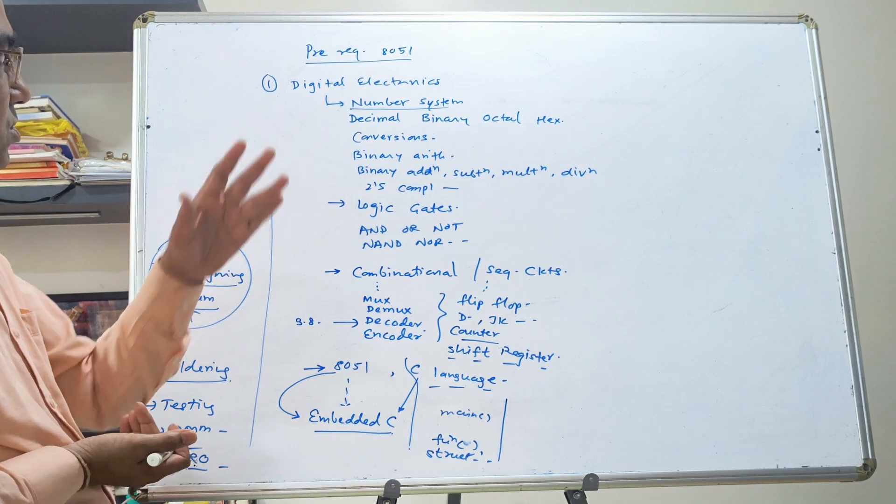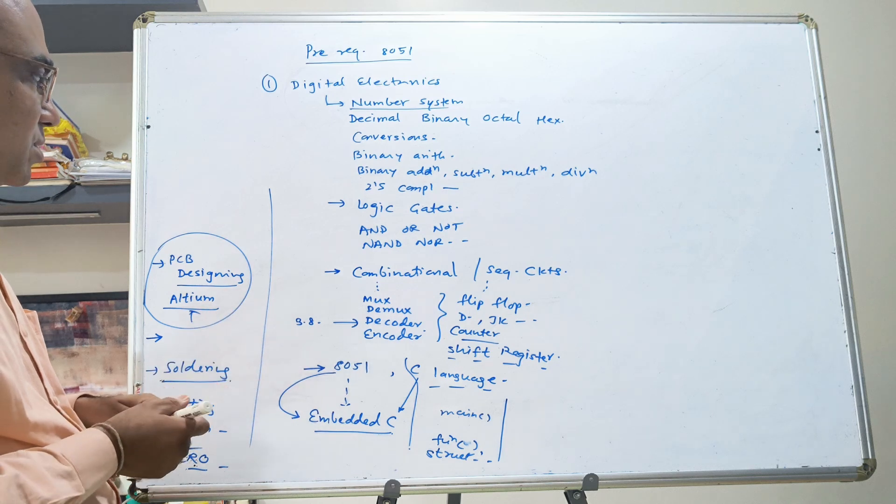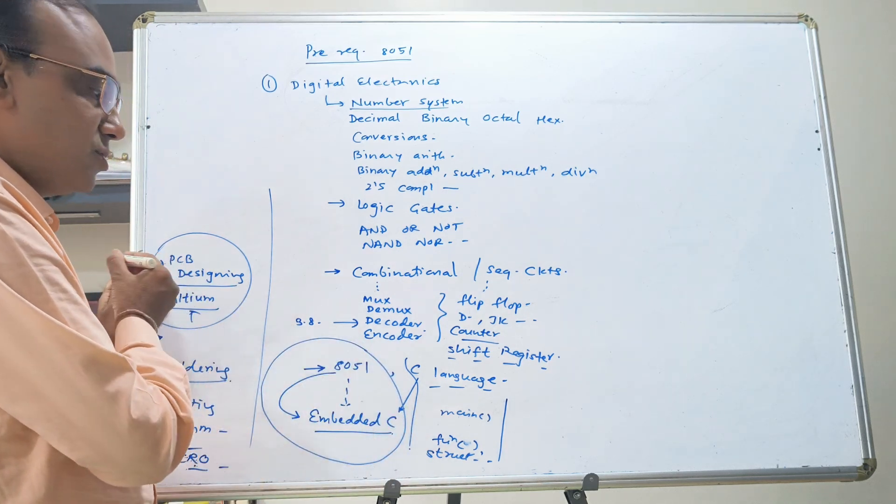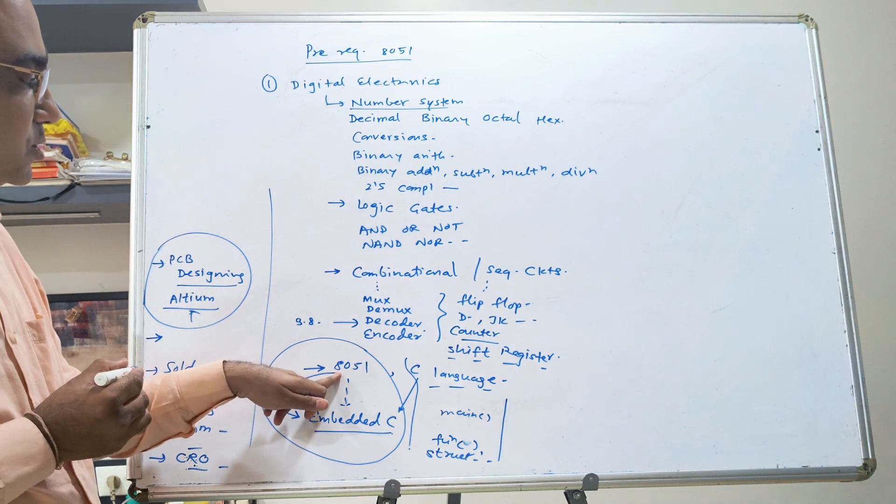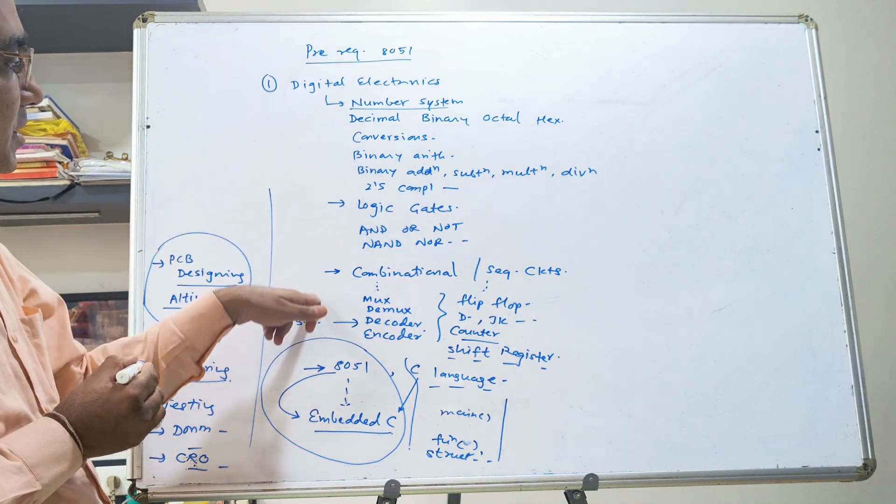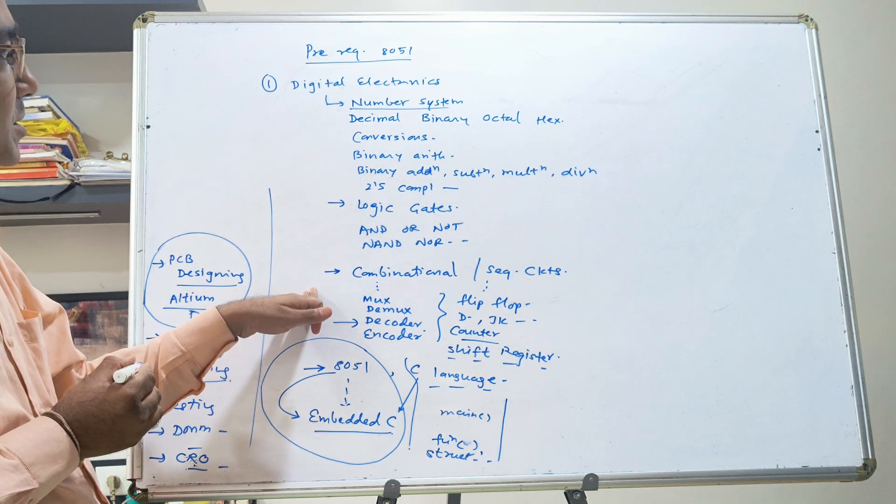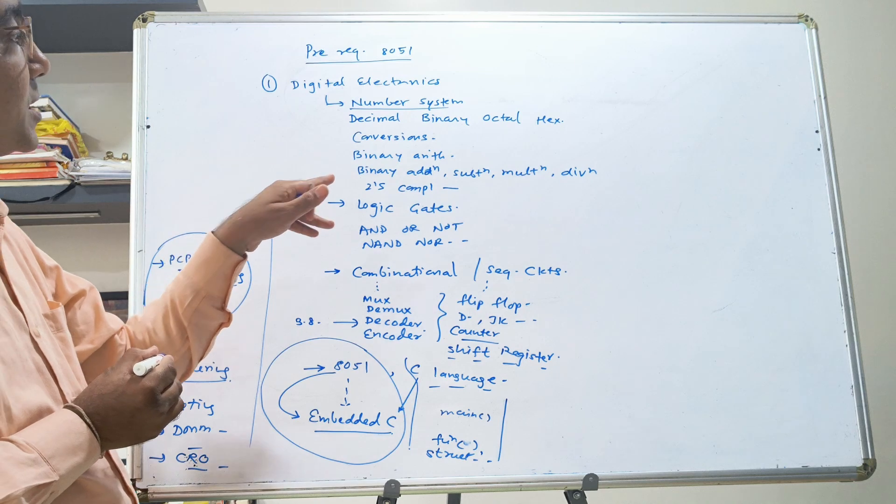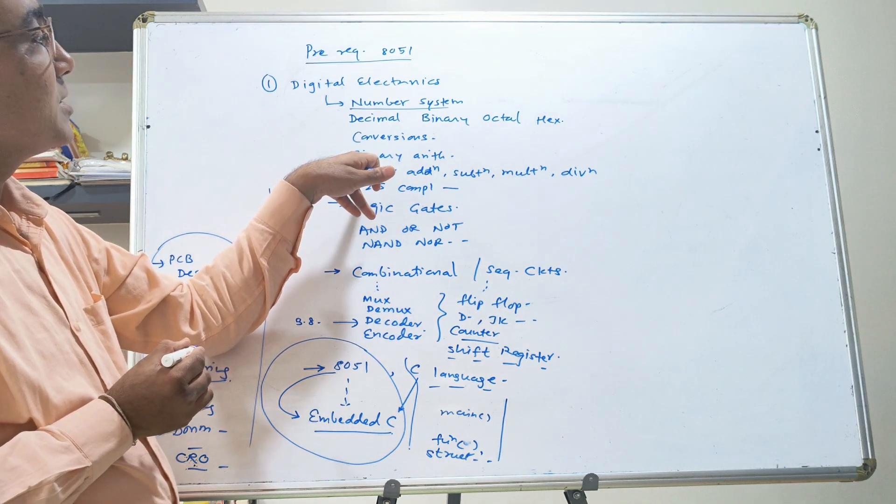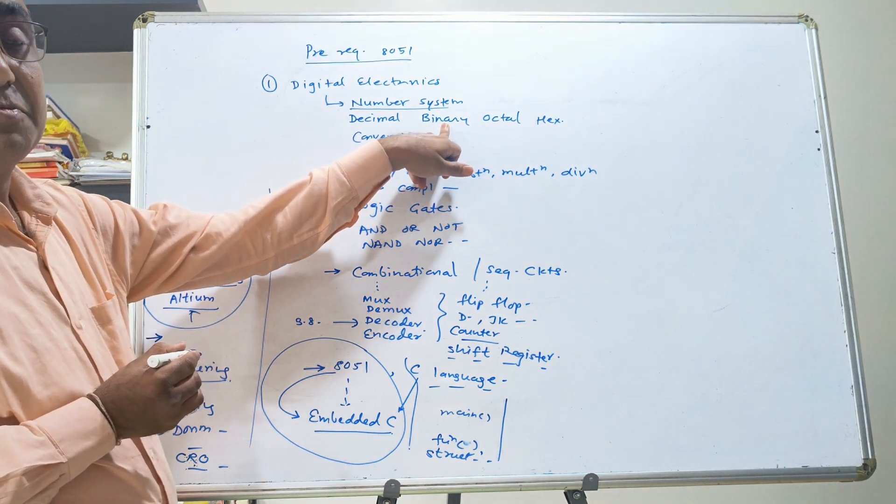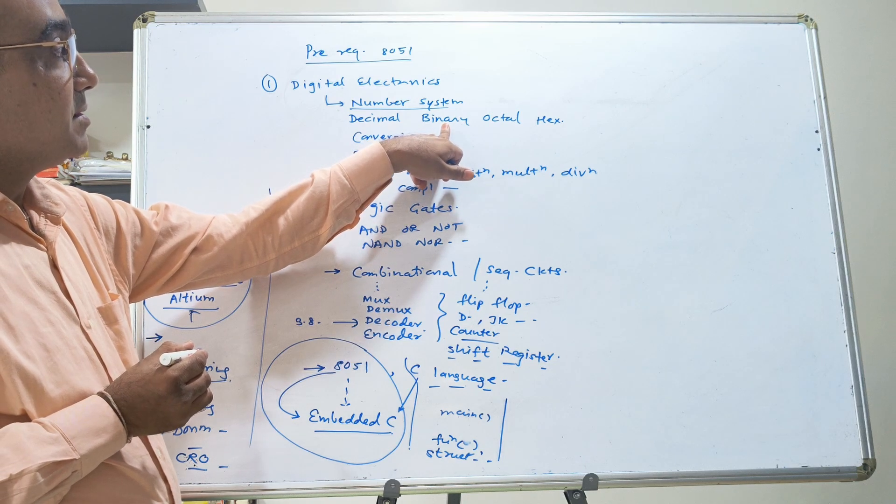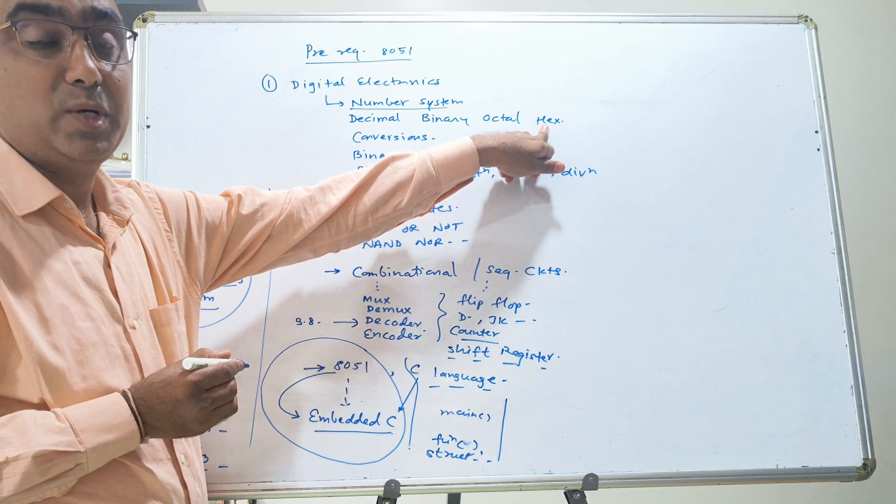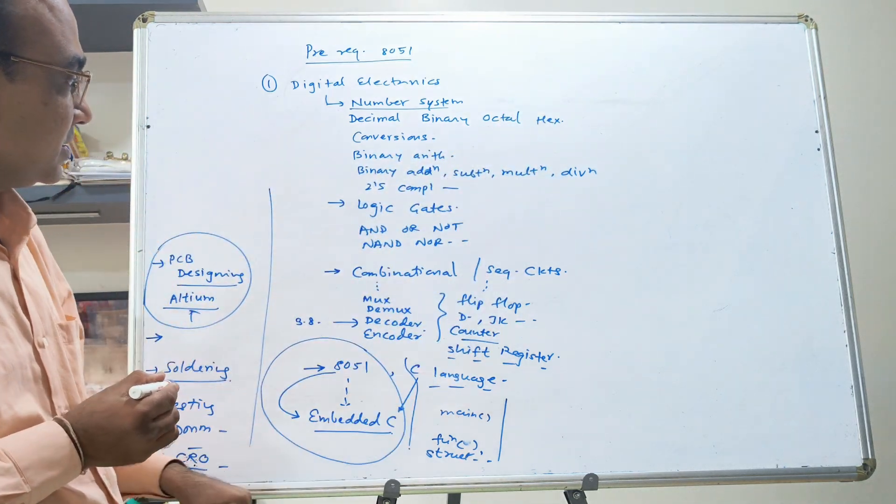You should start from this. Of course, our course is this. We are working on 8051. I am assuming that you know digital electronics. You have some background of digital electronics. When I say 8051 is an 8-bit microcontroller, I assume that you know what is binary number system. Bit means binary digit. When I say the memory addresses are written in hex, I assume that you know the hexadecimal number system.